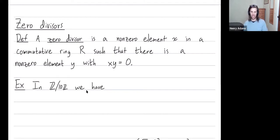A zero divisor in a ring is a non-zero element x such that there's a non-zero element y so that x times y is equal to zero.